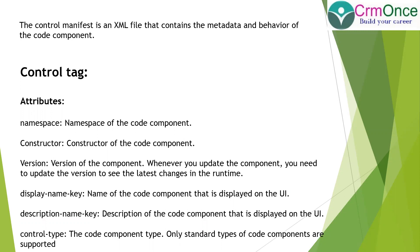Under the control tag we have the namespace attribute, the constructor attribute, version, display name key, description key, and control type. Namespace is the namespace of the entire control component. Constructor is the constructor of the component. Version is the version of the component, which you can update later - when you make changes and want to publish, you can change the version number. Display name is the name of the control displayed on the UI. Description is something you write about the control. Control type is 'standard' - only standard type is supported for code components.